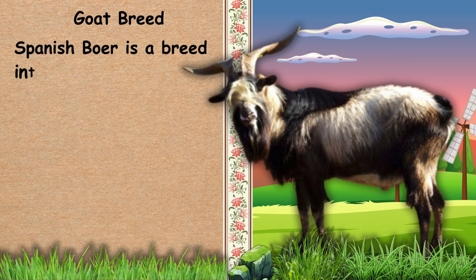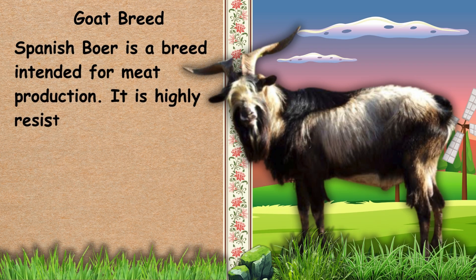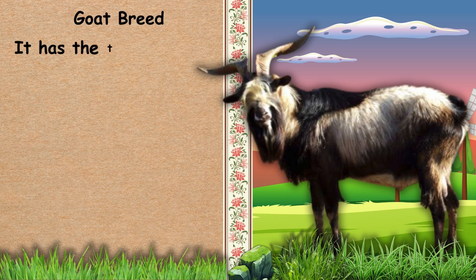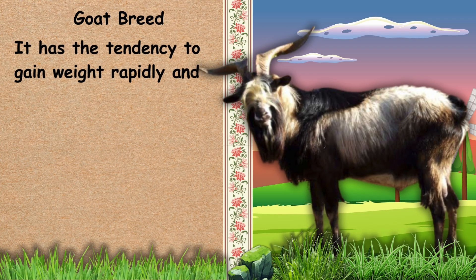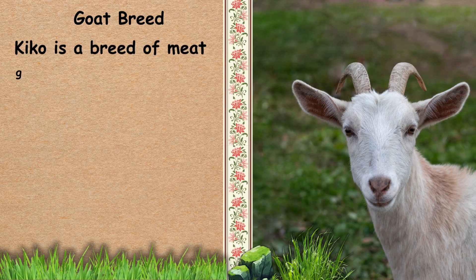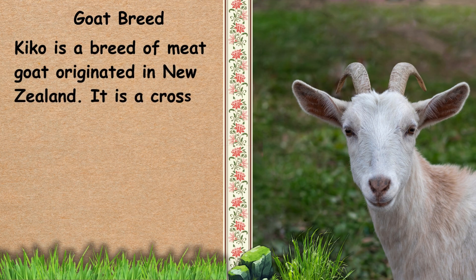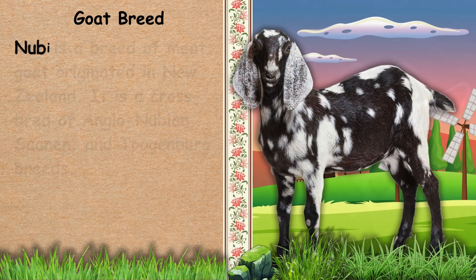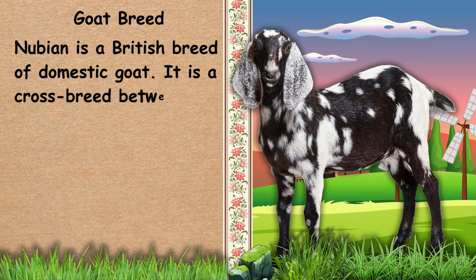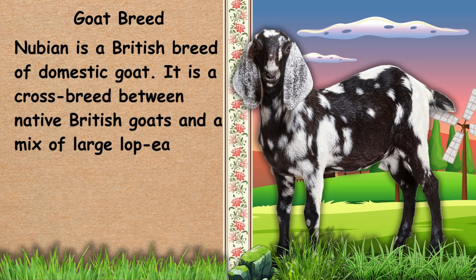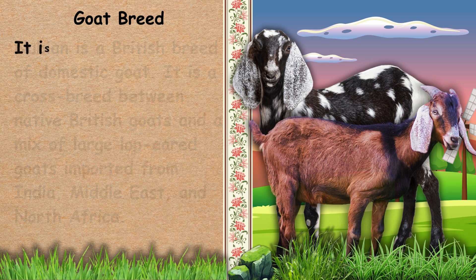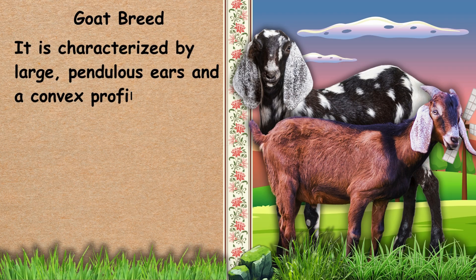Next, we have Spanish Goat. Spanish Goat is a breed intended for meat production. It is highly resistant to diseases and can adapt well to hot, dry semi-desert conditions. It has a white body and distinctive brown or black heads. It has the tendency to gain weight rapidly and develop heavy muscle. Next, we have Kiko. Kiko is a breed of meat goat originated in New Zealand. It is a crossbred between native British goats and a mix of large lop-eared goats imported from India, Middle East, and North Africa. It is characterized by large, pendulous ears and a convex profile.